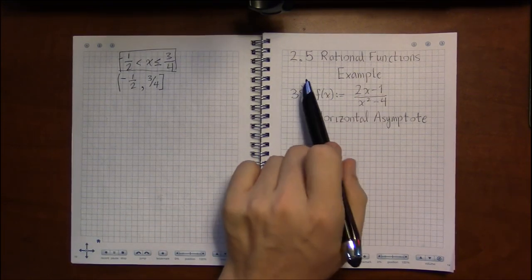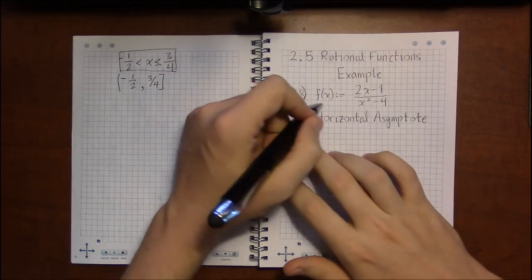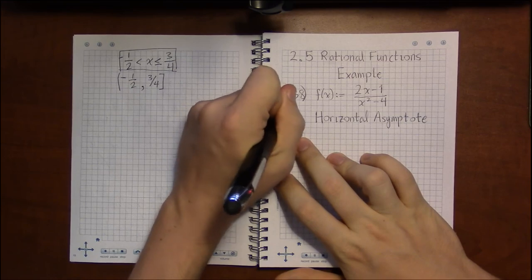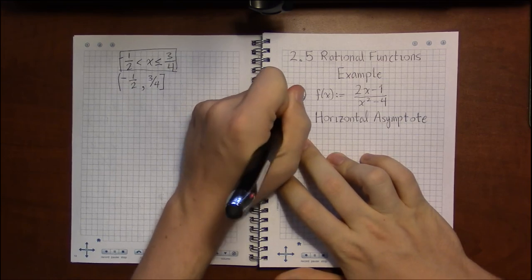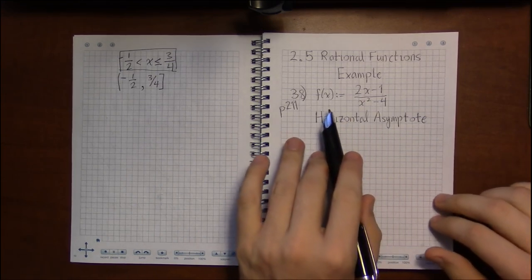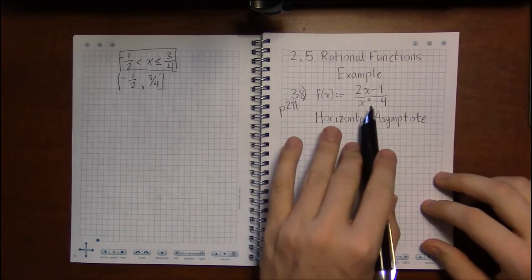Let's take a look at another set of examples from section 2.5. So I'm looking at exercise number 38 on page 211 and we're supposed to be looking for the horizontal asymptotes of the following functions.